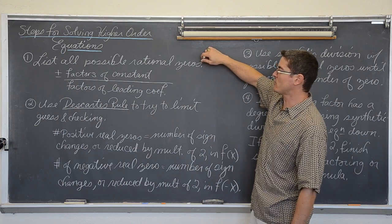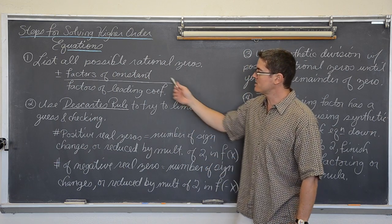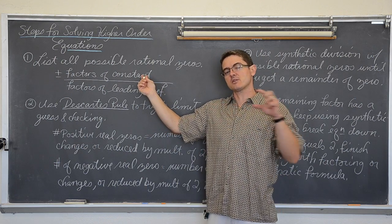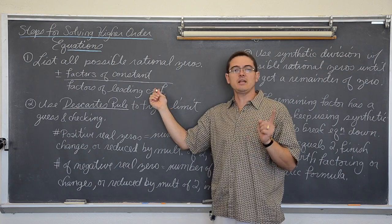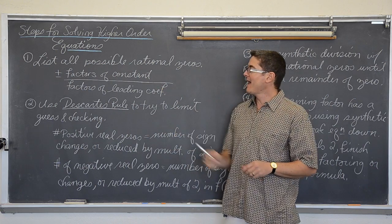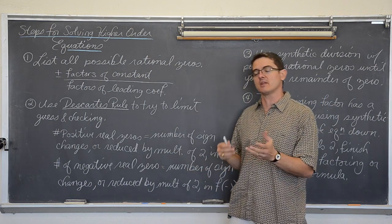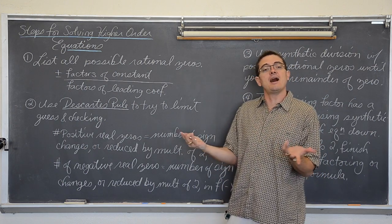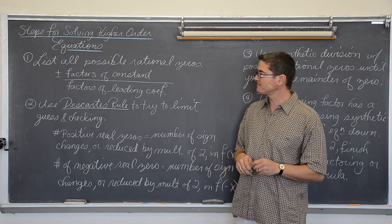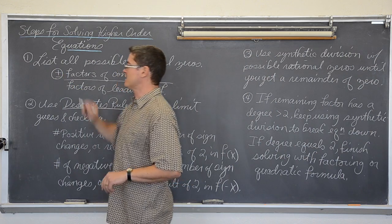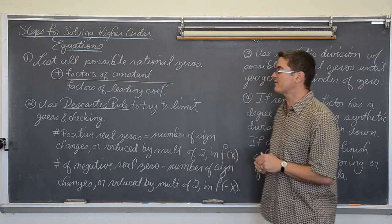You want to list all the possible rational zeros. This is called the Rational Zero Theorem in your textbook. What you do is look at the constant — the number at the end of the equation with no variable — and break down all its factors. Then take the factors of the leading coefficient, the number in front of the term with the highest exponent, and make a list of possible rational zeros. Remember, rational means a fraction like 7/2 or 5/2; it is not imaginary and not something like the square root of 7. And don't forget to put a plus or minus, so you can end up with a long list of possible zeros right off the bat.